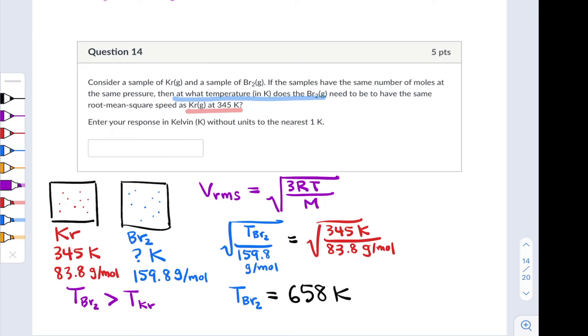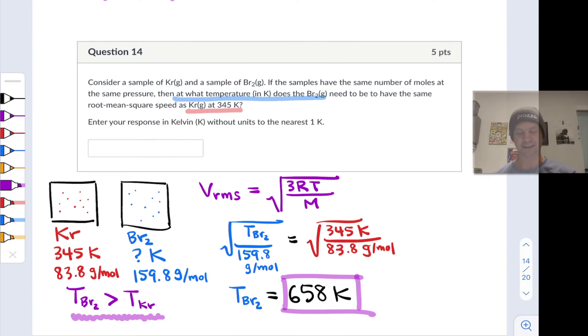And this jives with the intuition that we had earlier that the temperature of the bromine is going to have to be quite a bit greater than the temperature of the krypton because bromine gas, Br2 gas, is quite a bit heavier than krypton gas. And notice as well that this ended up being a pretty simple proportionality problem since with the square roots gone, we see that the ratio of temperature to molar mass is the same in both gases when they have the same root mean square speed.